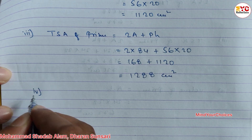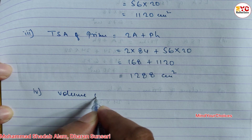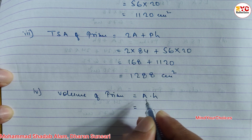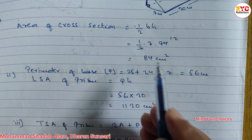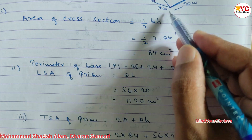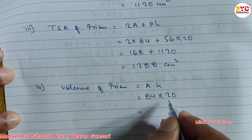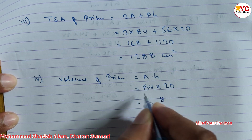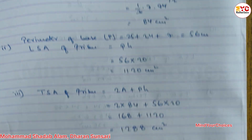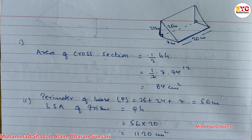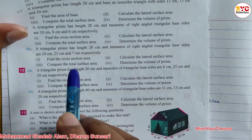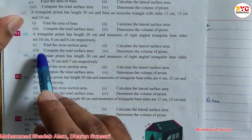In number 4, we have to find out the volume of the prism. Volume of prism formula is A into H — area of cross-section into height. Area of cross-section is 84, and height of prism is 20. So we can find out the lateral surface area, total surface area, and volume of the right-angle triangular prism. So you can do question number 11 and 12.